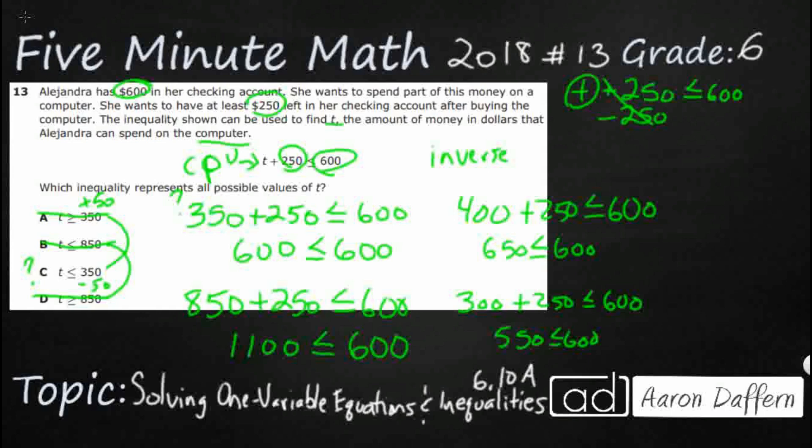So if you get plus $250 minus $250, they're going to cancel each other out. But we have to do the same thing on the other side of the equation. We have to keep it balanced. Think of it as a balanced beam. So $600 minus $250. So we're going to get T less than or equal to $350. Answer is C.